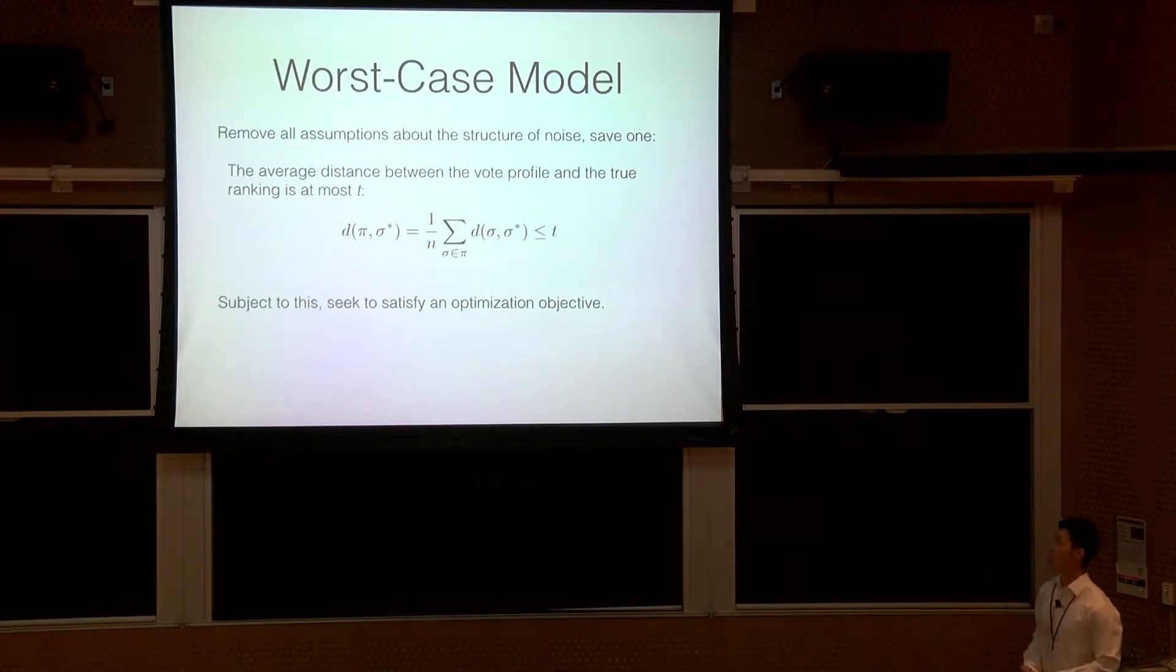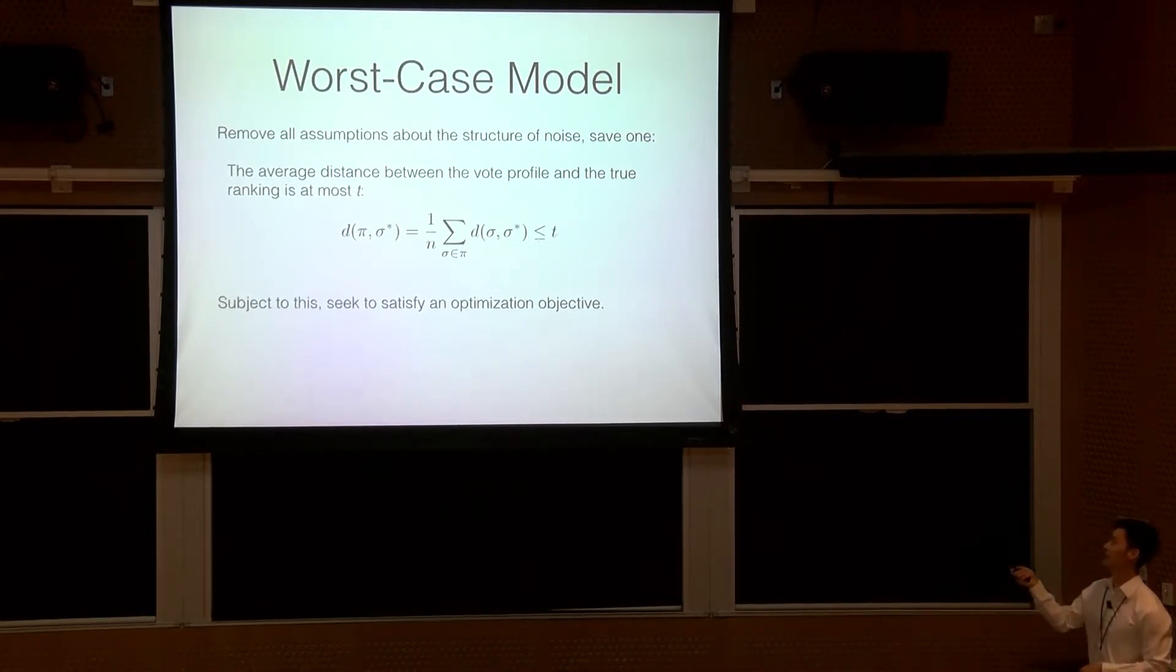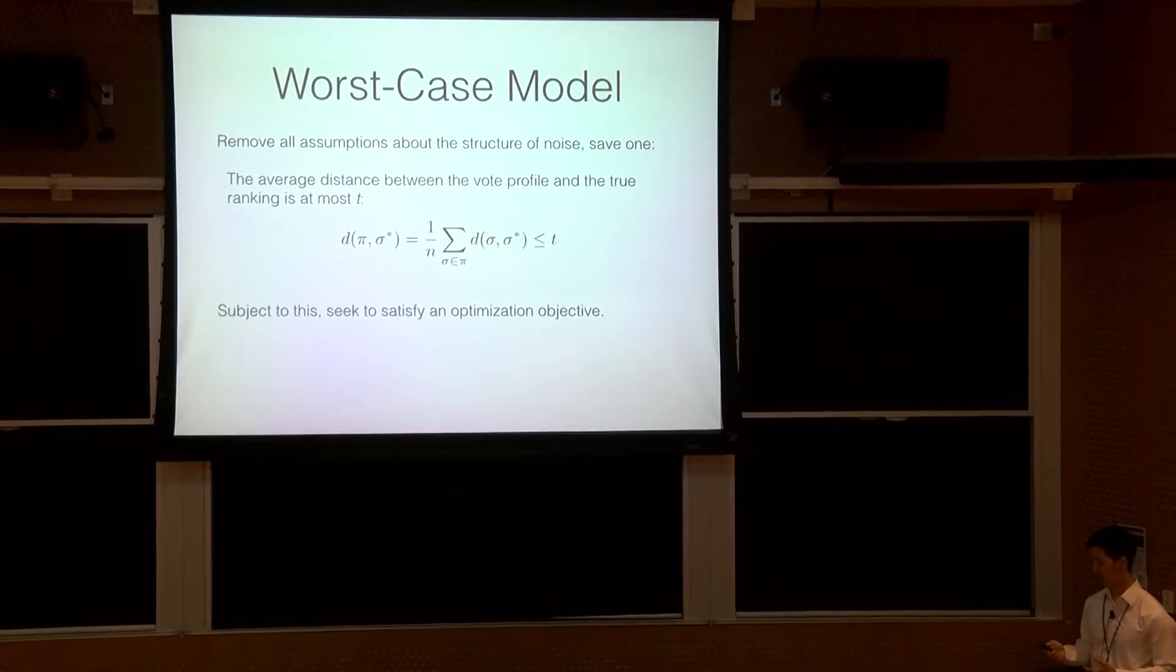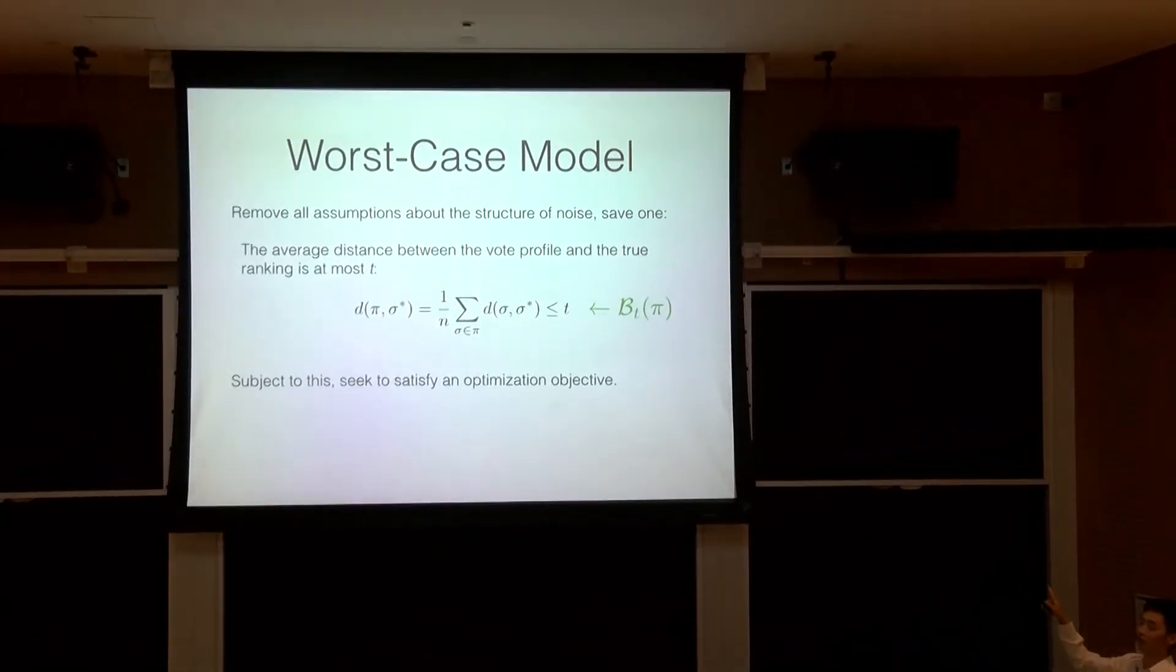Now that we have all the notation squared away, let's get into the actual worst-case model. So, as I said before, the worst-case model removes all assumptions about the structure of noise. It just has a bound on the total noise. And essentially, you just very naturally take the average of all pairwise distances between things in pi and the actual true ranking and get some average distance that is going to be less than some parameter t. And I'll discuss how we deal with actually choosing t in practice later. It's actually very interesting and kind of hard. But, for now, let's just say we actually know t. And subject to this assumption, the votes can be adversarial, but we want to satisfy an optimization objective. And, as I noted before, this is going to be the ball of feasible ground truth.